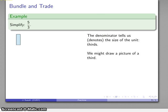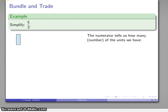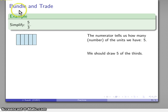Well, how many of them do I actually have? The numerator tells us how many - numbers the units. So here the numerator is five. That means I have five of these things. So let's go ahead and draw those. Here's one, two, three, four, five. And there's a picture of what this fractional amount is: five-thirds. There's one, two, three, four, five of these things, and each of these is representing one-third.